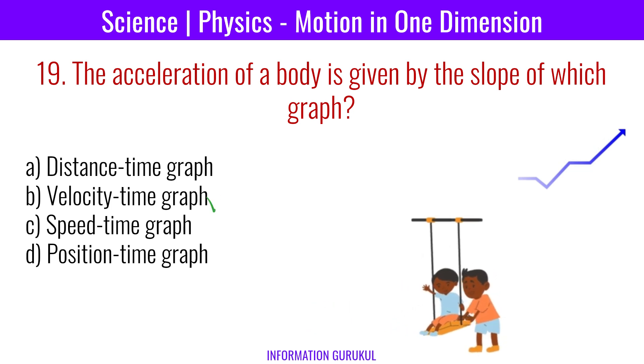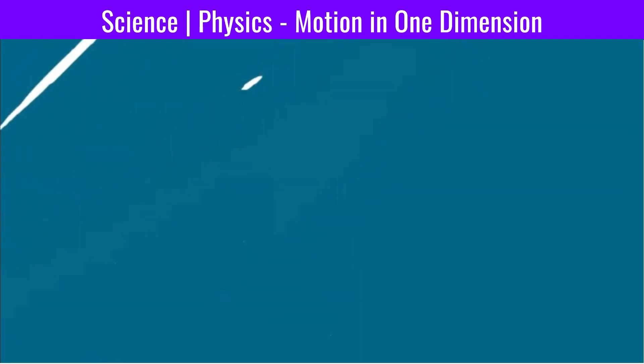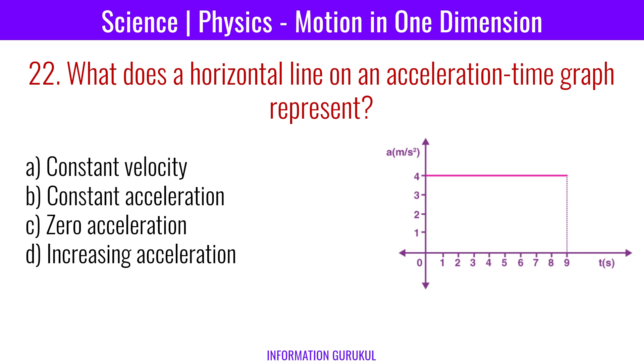A person running in the same direction as a moving bus sees the bus moving slower. In a velocity-time graph, a negative slope indicates negative acceleration.